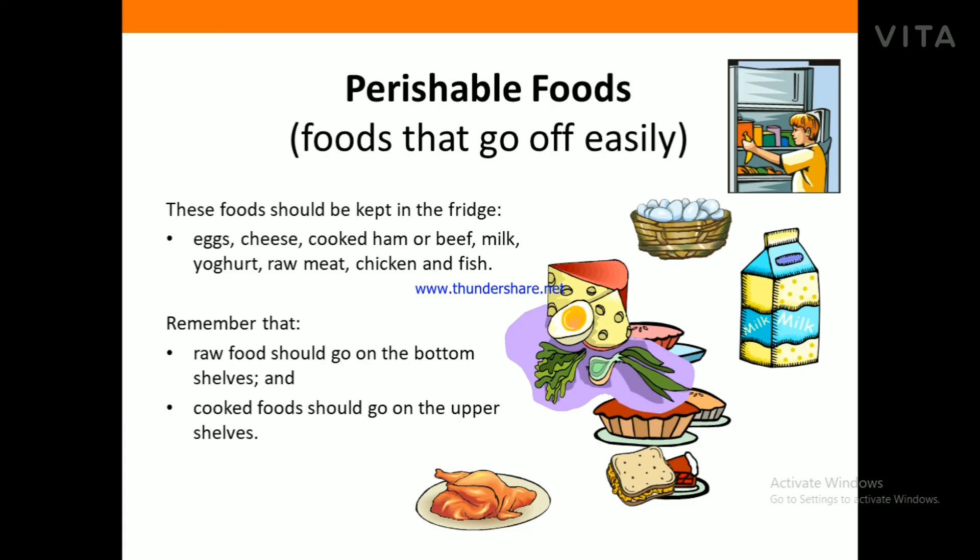Perishable foods are foods that go off easily and should be kept in the fridge. These include vegetables, eggs, cheese, cooked ham or beef, milk, yogurt, raw meat, chicken, and fish. Remember that raw food should go on the bottom shelf.